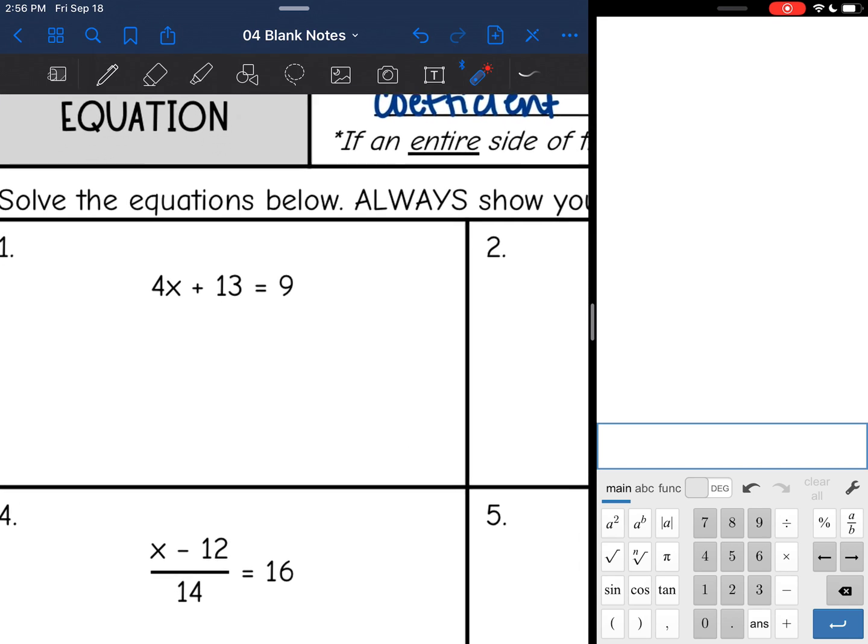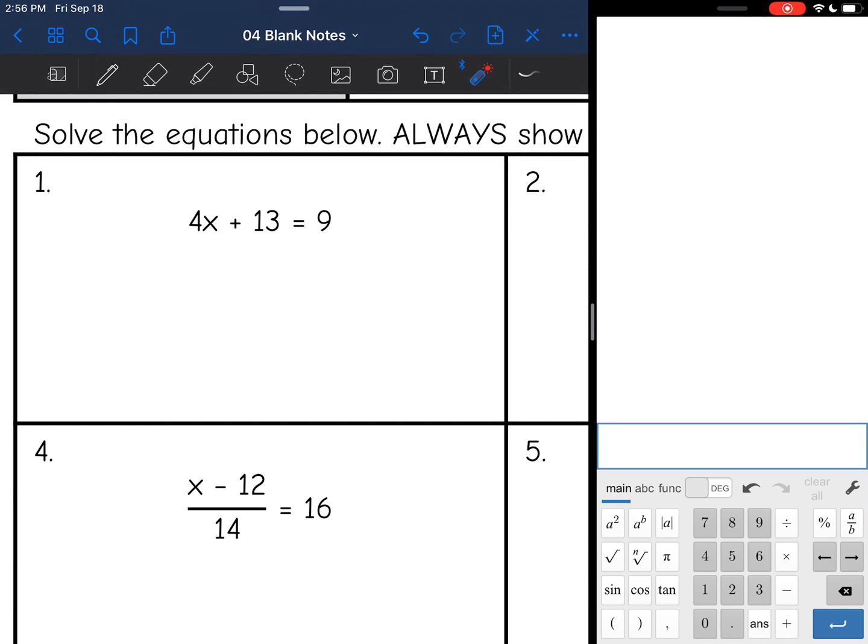Okay, let's look at number one. I have 4x plus 13 equals 9. So my constant here is 13. I want to zero that out first. So I'm going to subtract 13 from both sides, and I get 4x equals negative 4. And now I'm going to divide both sides by 4, and I get x equals negative 1.